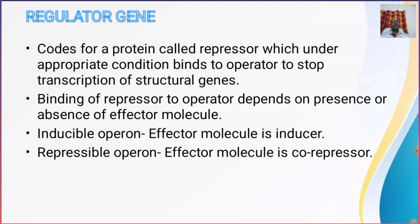In the case of a repressible operon, the effector molecule is called a co-repressor, and the example is the trp operon or tryptophan operon. In that case, tryptophan is the effector molecule and is known as the co-repressor. This concludes the discussion about the structure of an operon and the processes of induction and repression.